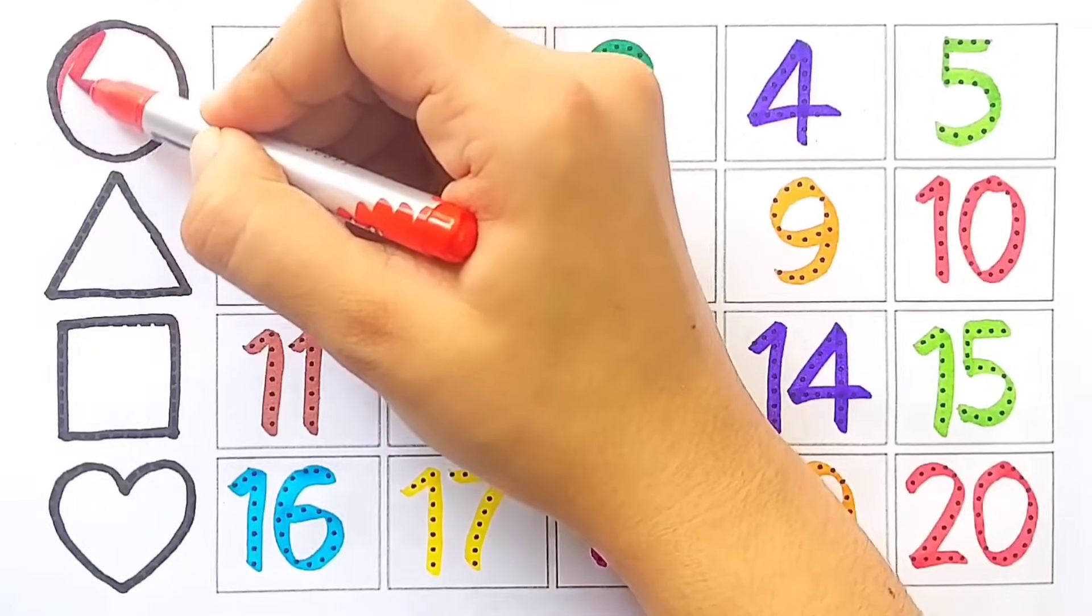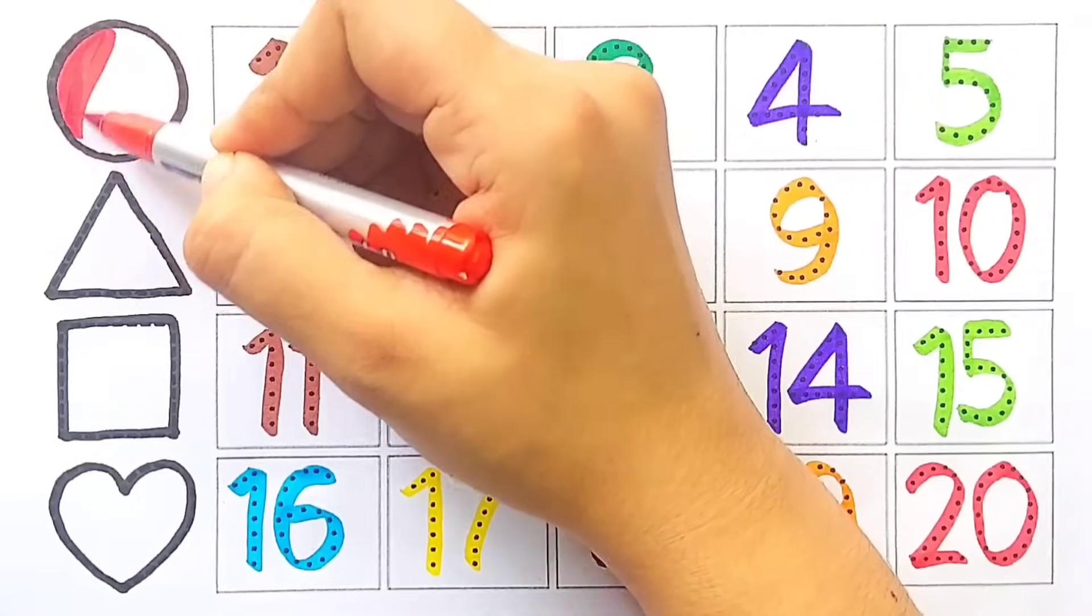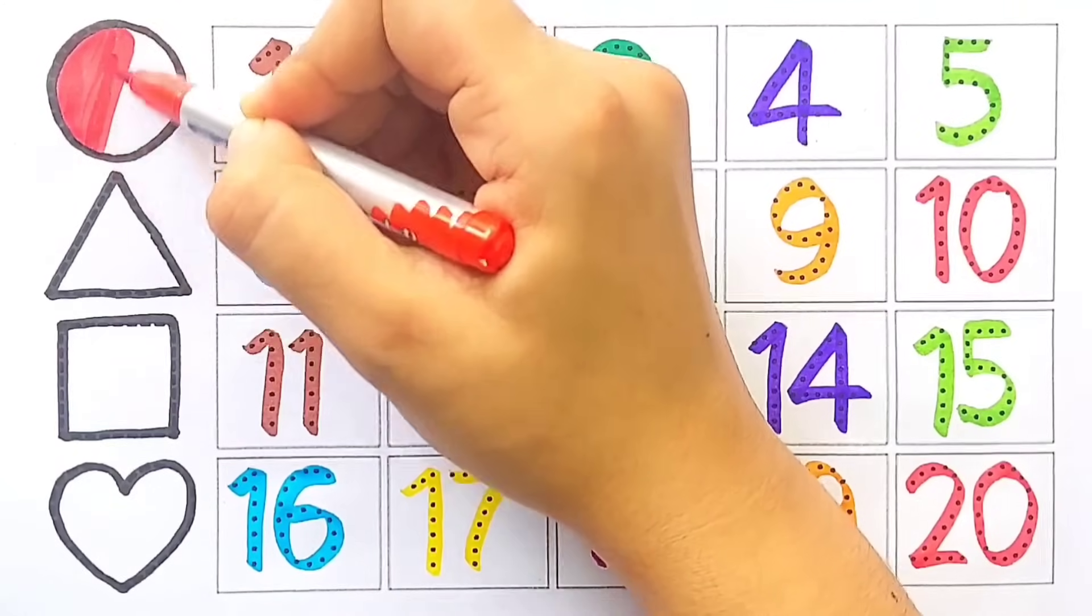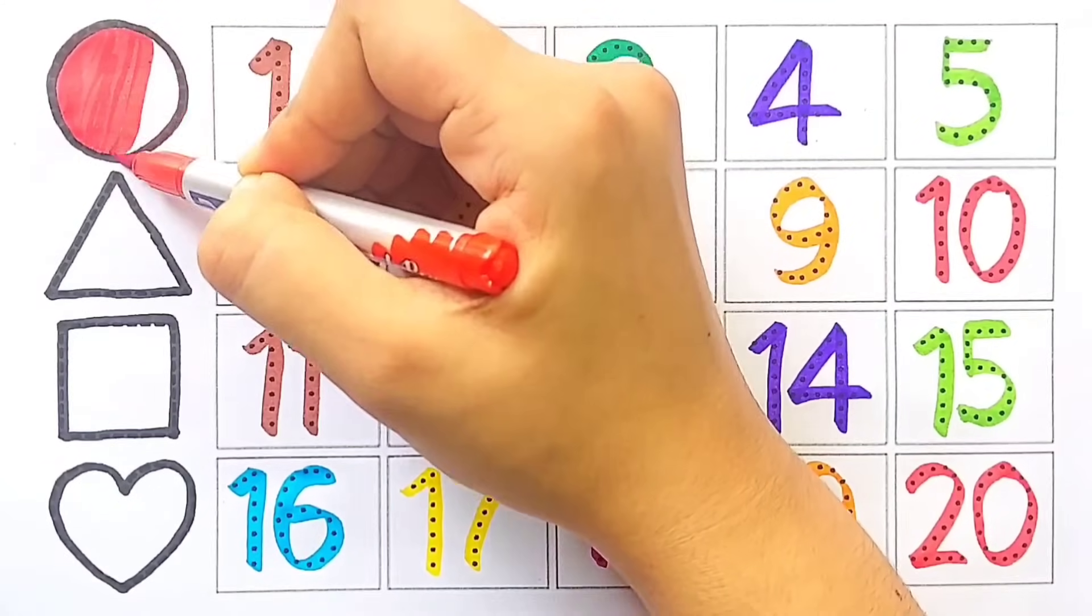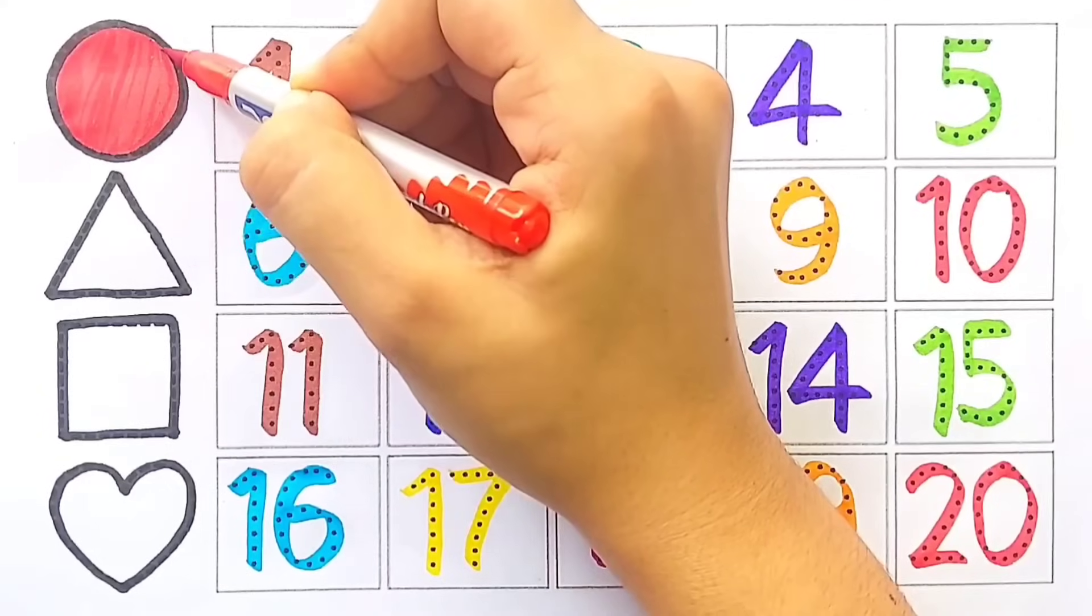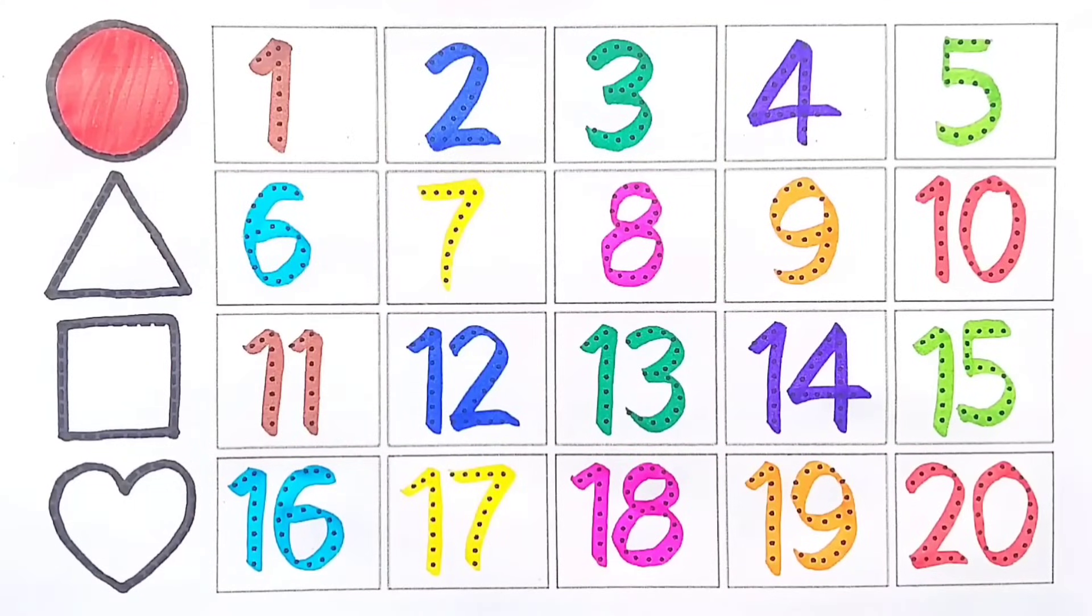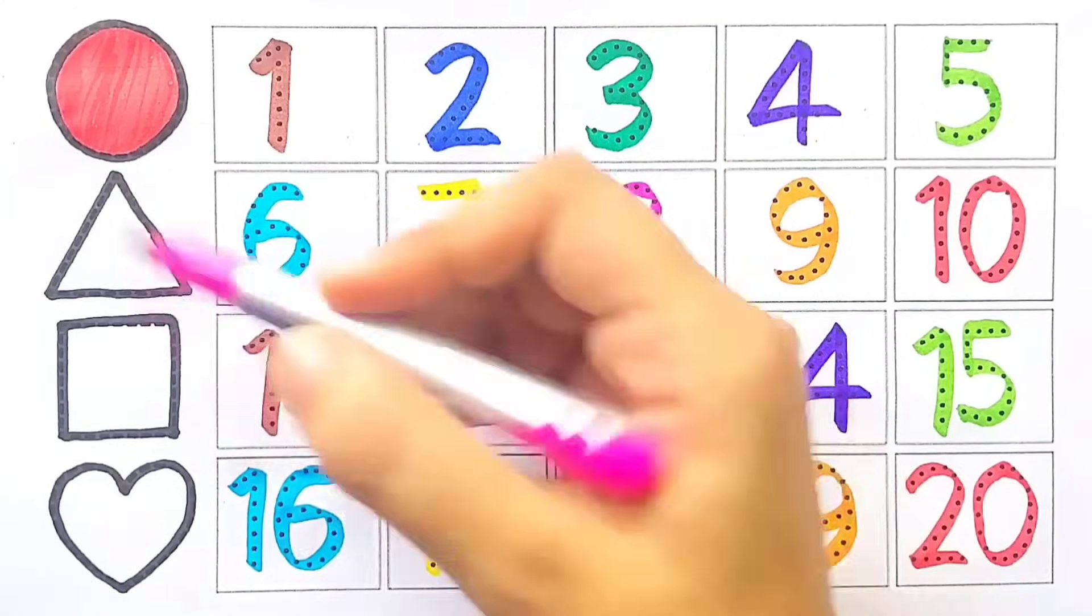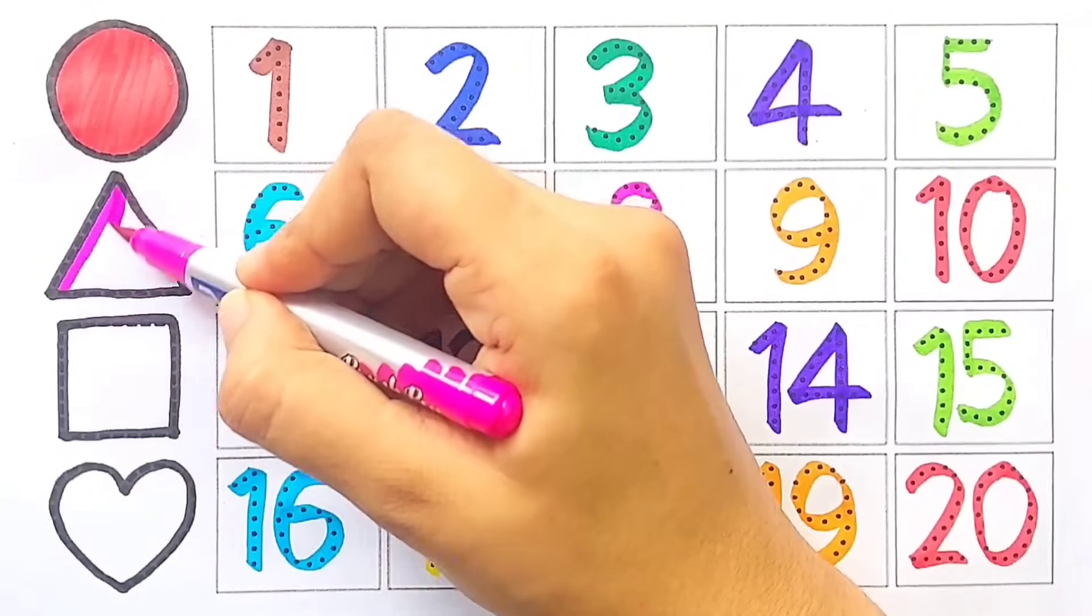Red color for circle, pink color for triangle.